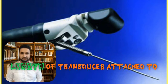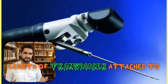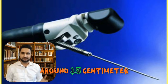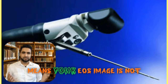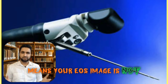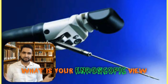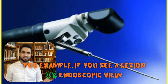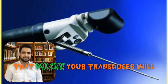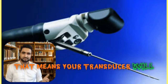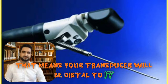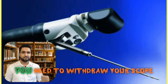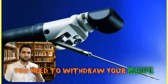As you know, the length of the transducer attached to the distal end of your scope is around 1.5 cm, meaning your EUS image is not the same as your endoscopic view. For example, if you see a lesion on the endoscopic view, your transducer will be distal to it, so you need to withdraw your scope to get the lesion into the EUS view.